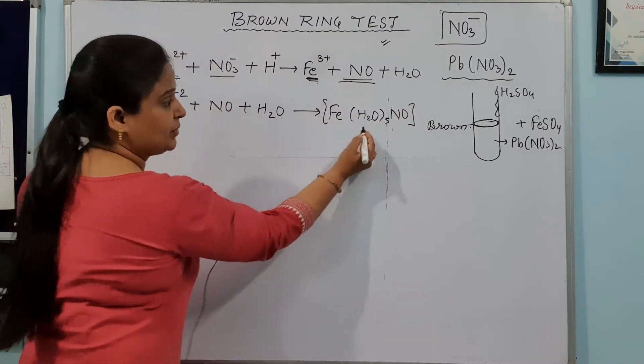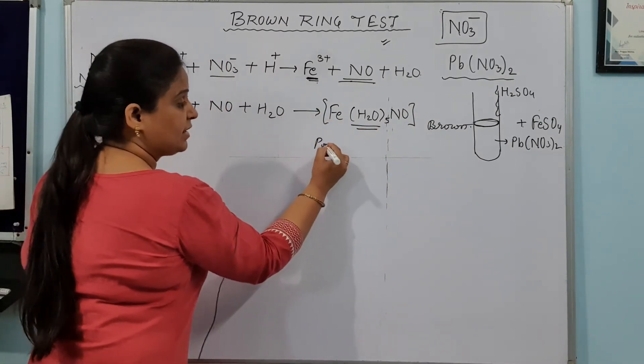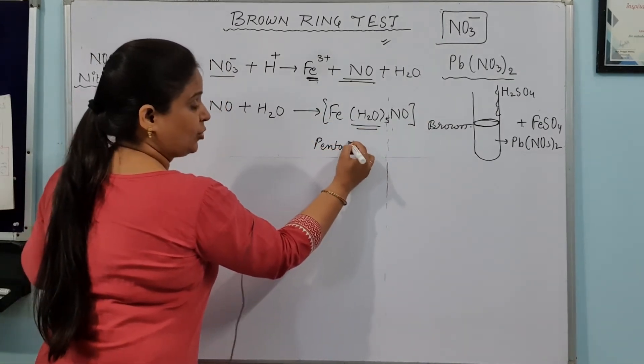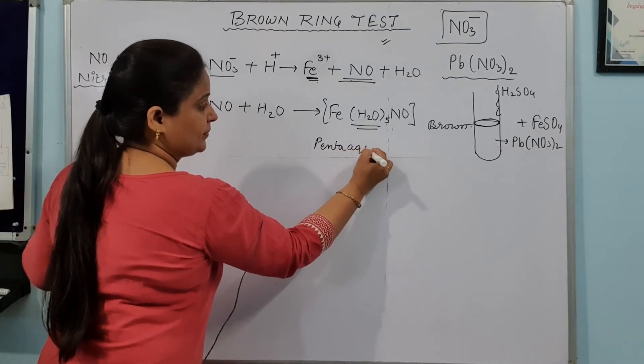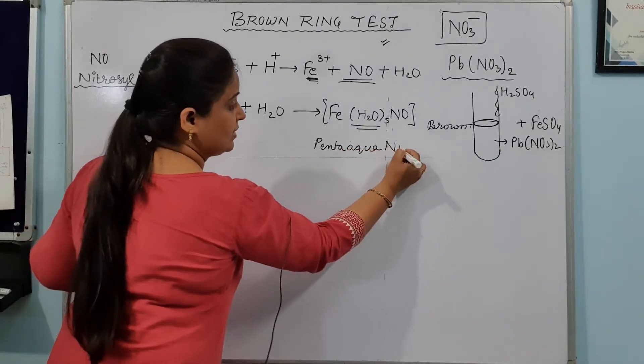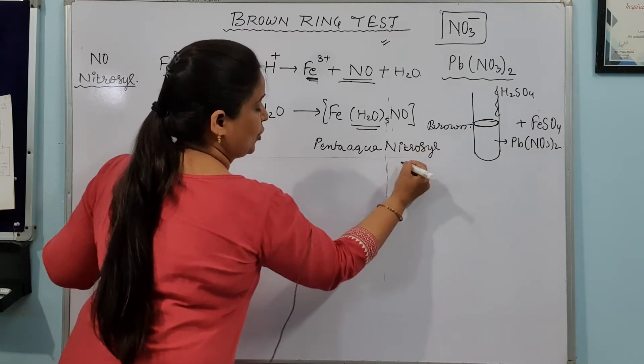And its formula is [Fe(H2O)5NO]2+. And the name of this compound is penta-aqua nitrosyl complex.